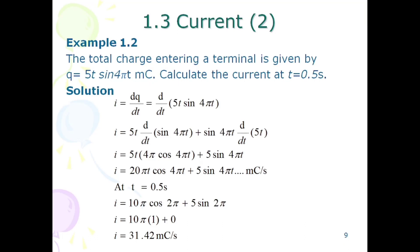Example 1.2: The total charge entering a terminal is given as q = 5t sin(4πt) mC. We have to find the current at time t = 0.5s. The formula is i = dq/dt, so we need to find the derivative of the given charge.